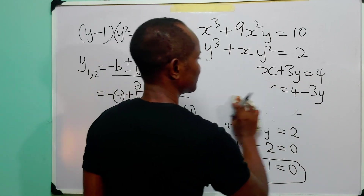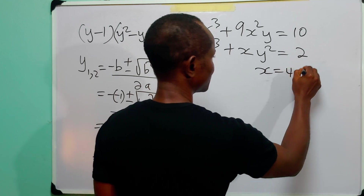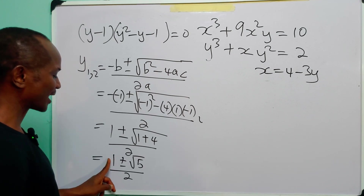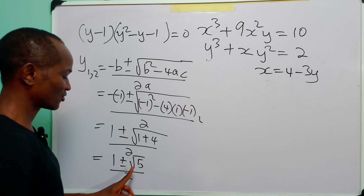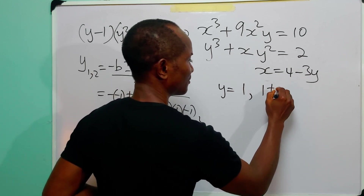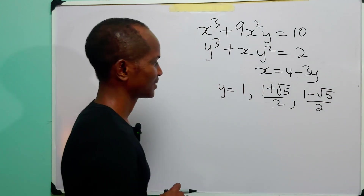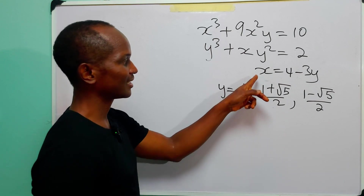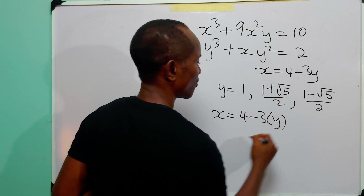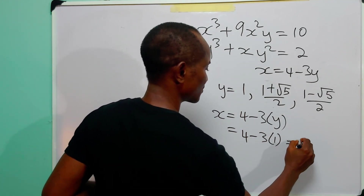So we have three values of y: y = 1, y = (1 + √5)/2, and y = (1 − √5)/2.